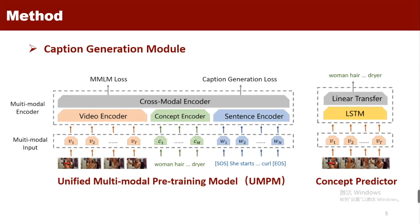The concept predictor aims at generating more detailed captions that contain rich objects for better localization. It takes video features as inputs and outputs semantic concepts, where the ground truth concept labels are nouns and verbs extracted from the annotated captions.